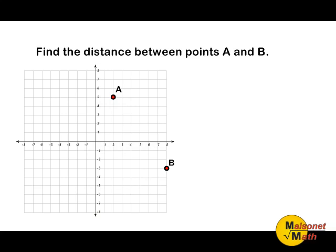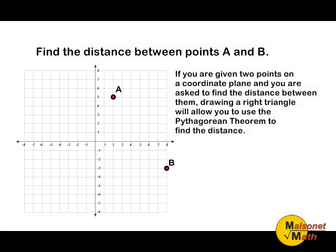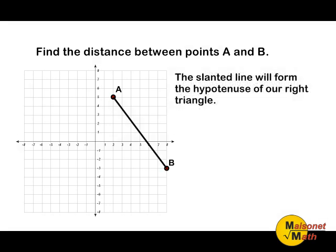If you are given two points on the coordinate plane and you are asked to find the distance between them, drawing a right triangle will allow you to use the Pythagorean theorem to find the distance between any two given points. In this case, we are trying to find the distance between point A and point B. The distance between point A and point B will form the hypotenuse of our right triangle.